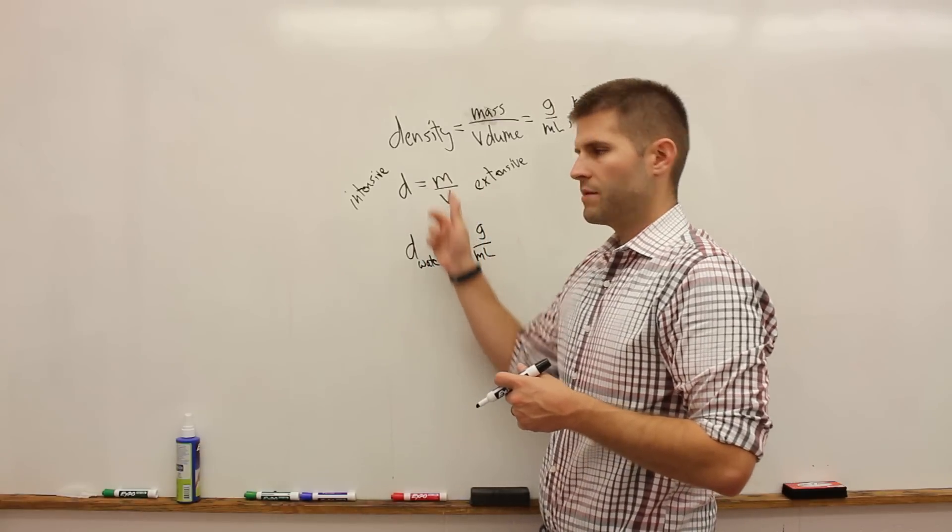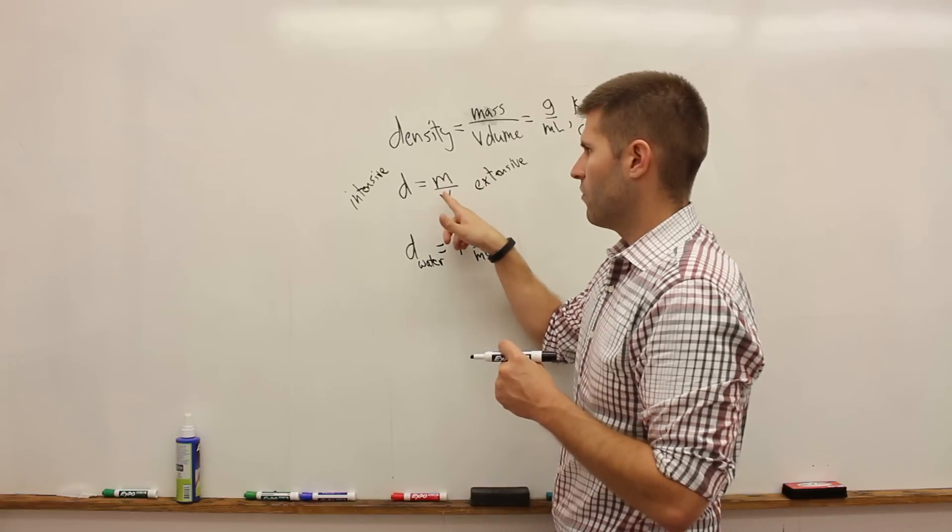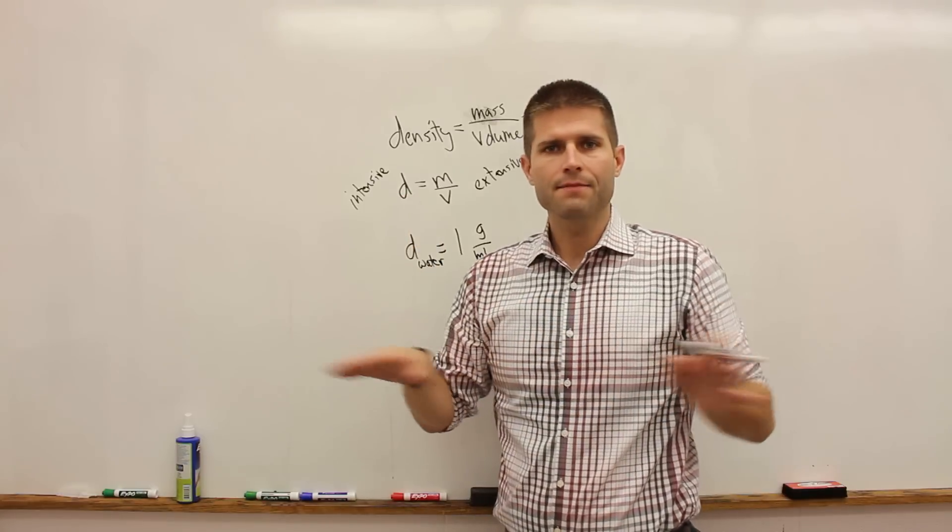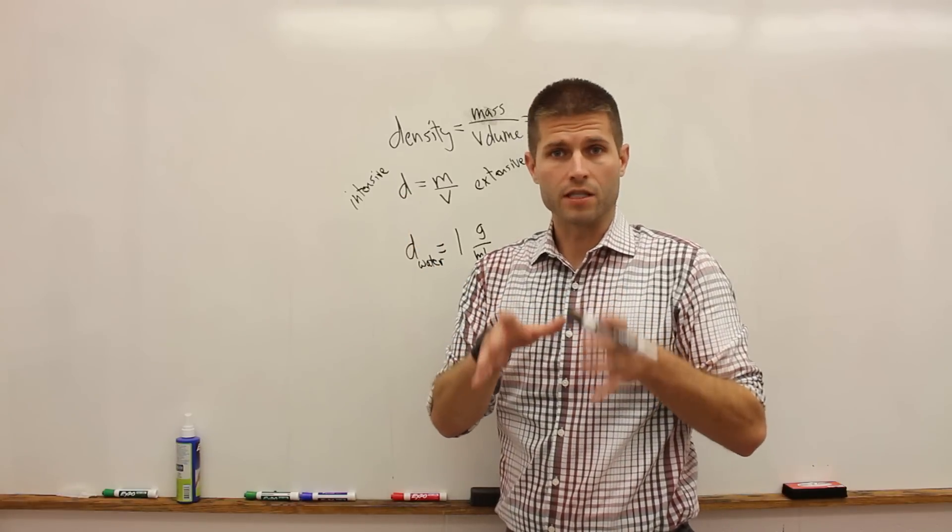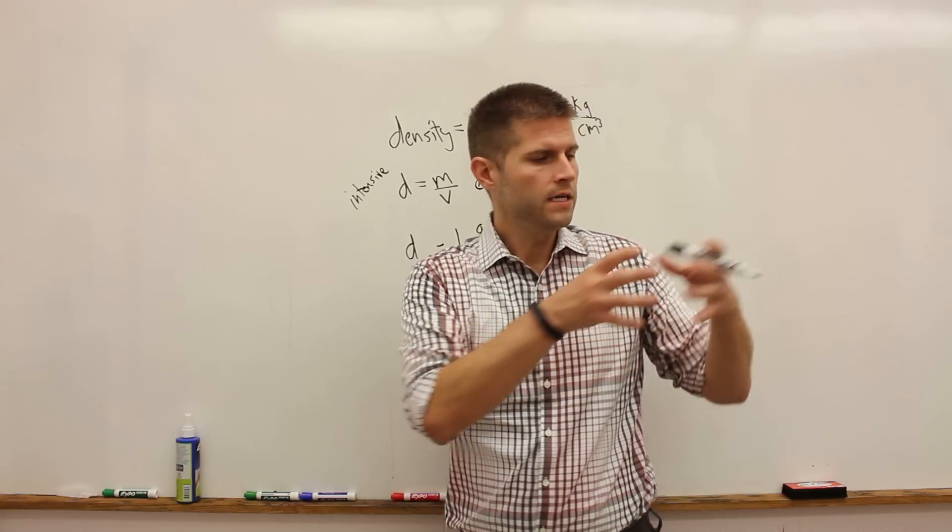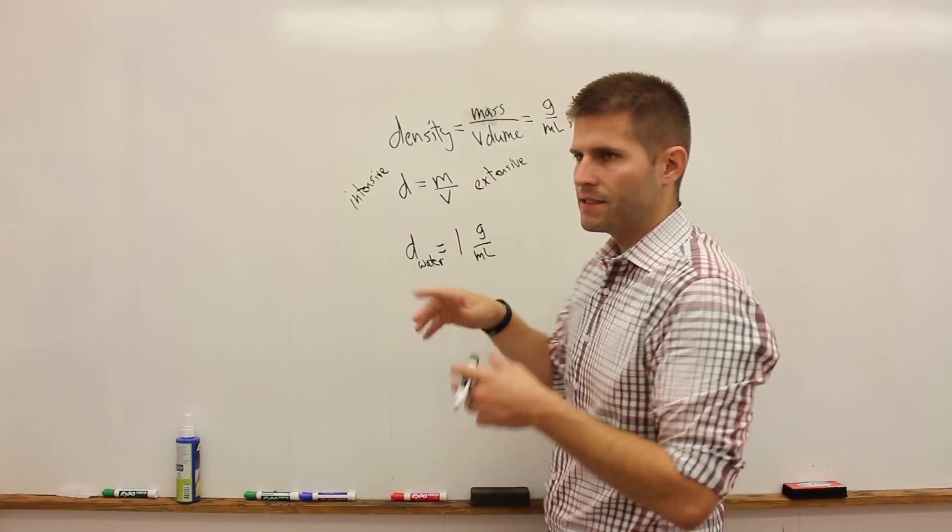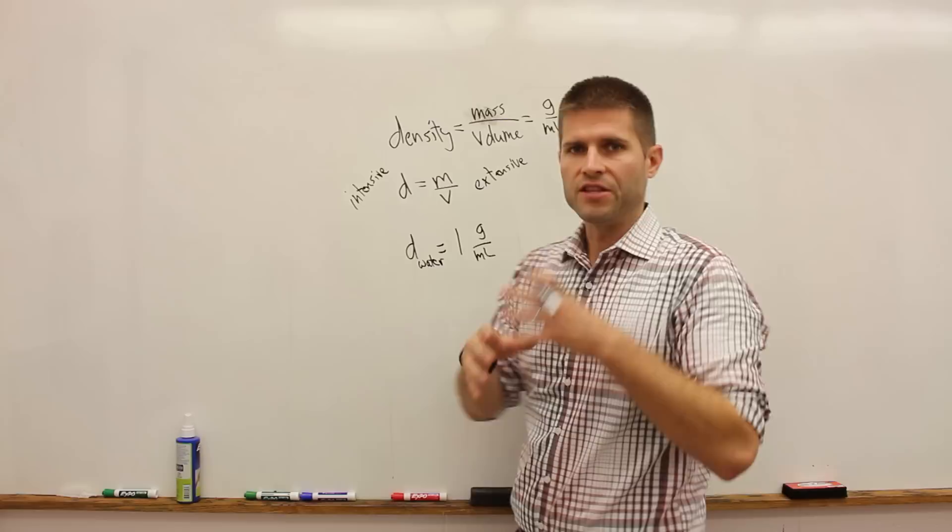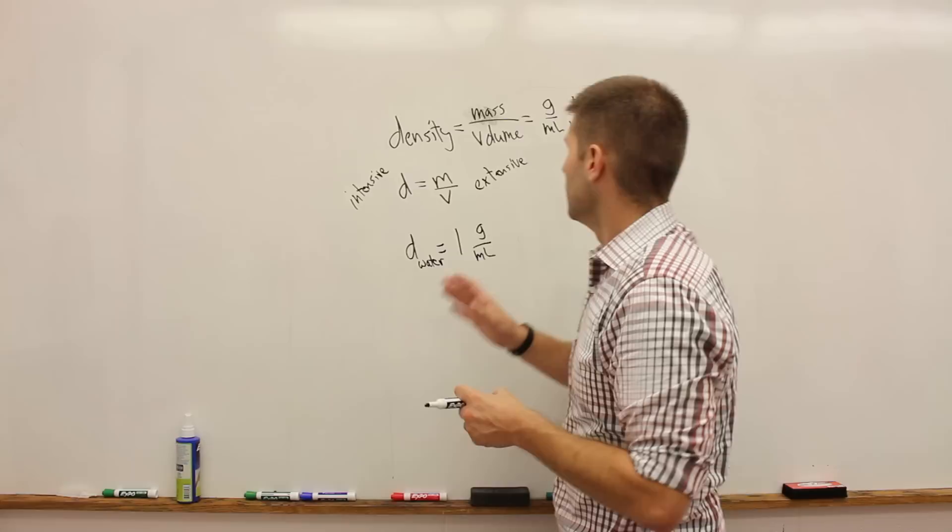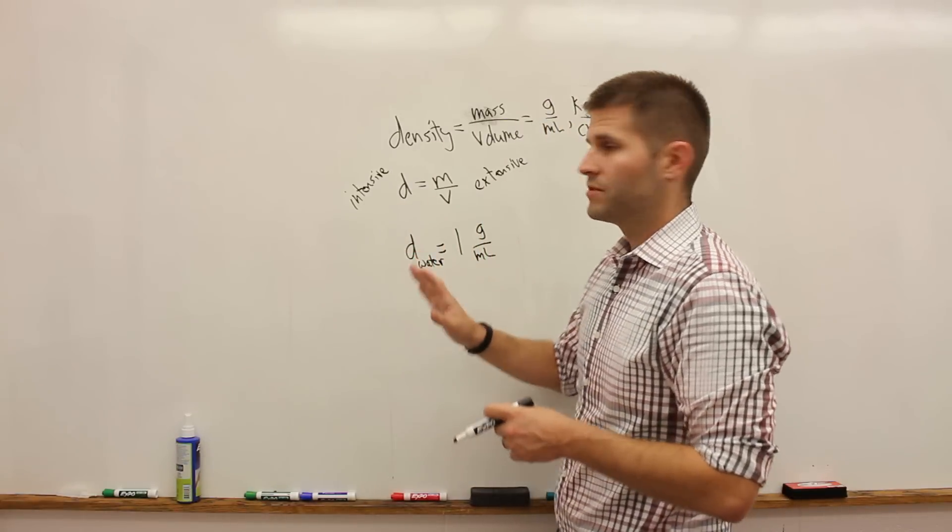They do depend on the amount of material present, but the ratio of the two, this fraction when you divide mass by volume, actually becomes an intensive property. So the density of an object does not depend on how much material is present. It's always constant. The density of one glass of water is equal to the density of a swimming pool of water. But the masses, the things that make up the density, are extensive properties - they do change as you add more material to the system.